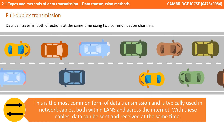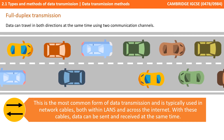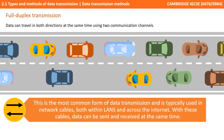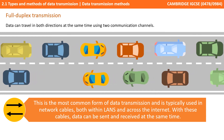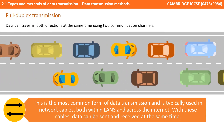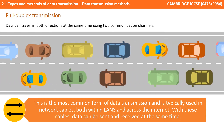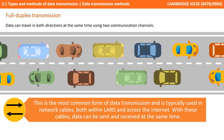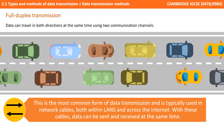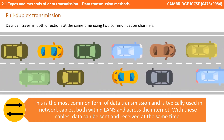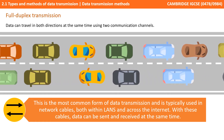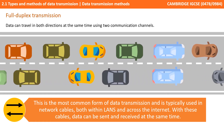And finally, full duplex, where data can travel in both directions at the same time using two communication channels. This is the most common form of data transmission and is typically found on network cables, both in LANs and across the internet.